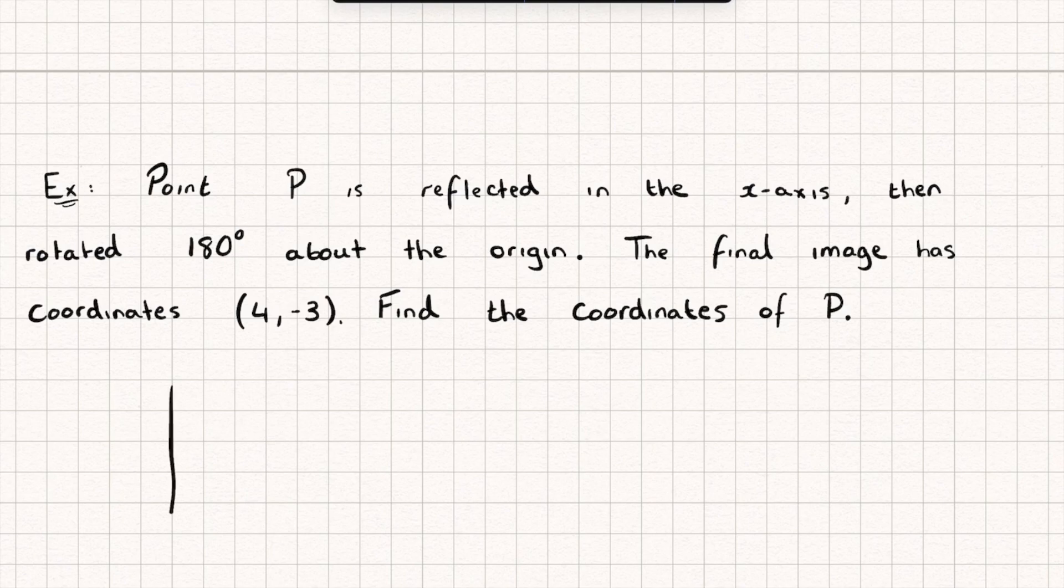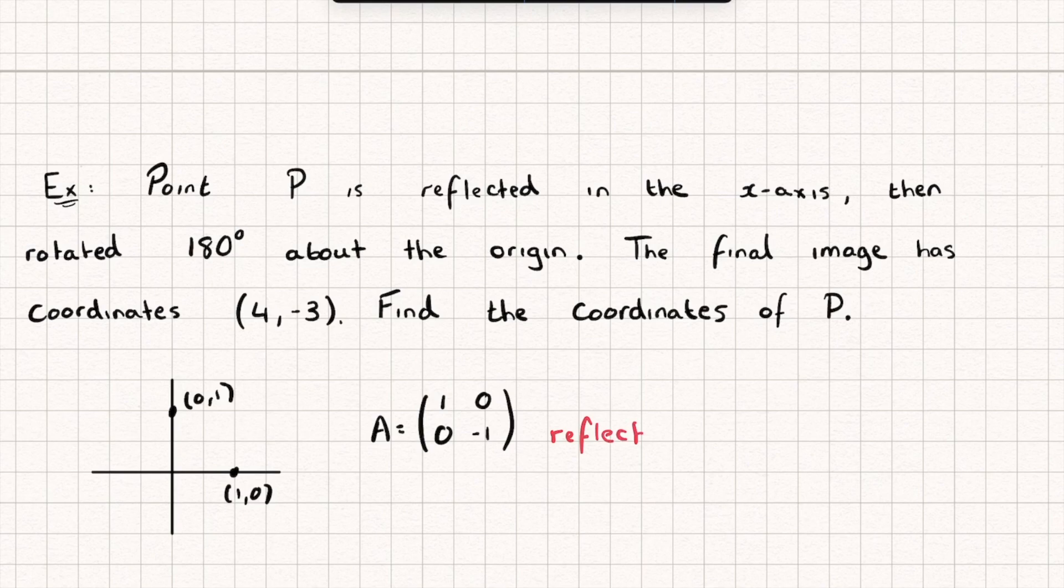Now if you've forgotten how to find that matrix what we'd do is we'd look at what happens to the points 1, 0 and 0, 1 under this transformation. So a reflection in the x-axis would leave the point 1, 0 fixed so that's the first column of my matrix so that stays the same and the point 0, 1 would go down and would become the point 0, negative 1 so that's the second column. So my matrix A is the reflection I'll label it in the x-axis.